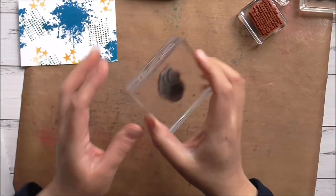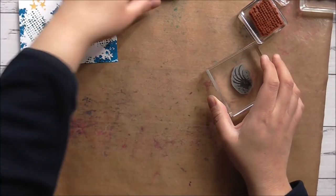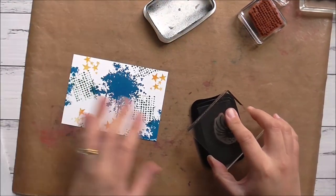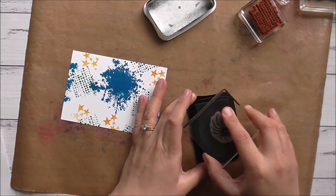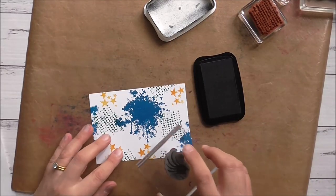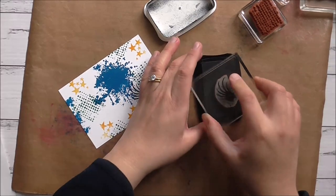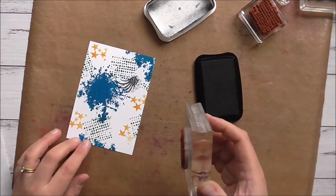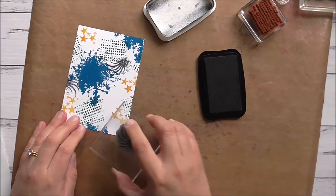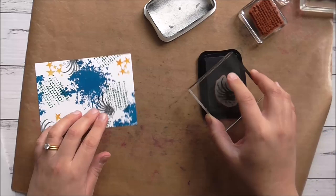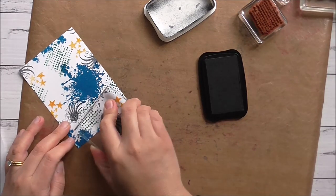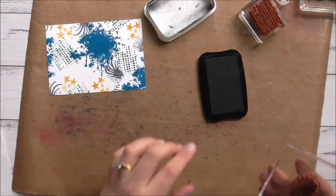And then I've got this image over here, and I'm going to use Memento Tuxedo Black on that. And I'll just pop that like that, and one more I think on the corner there. I'll do this one this way like that. So that's how that looks.